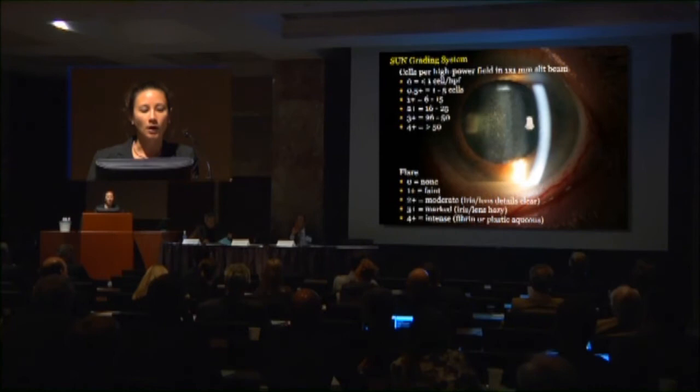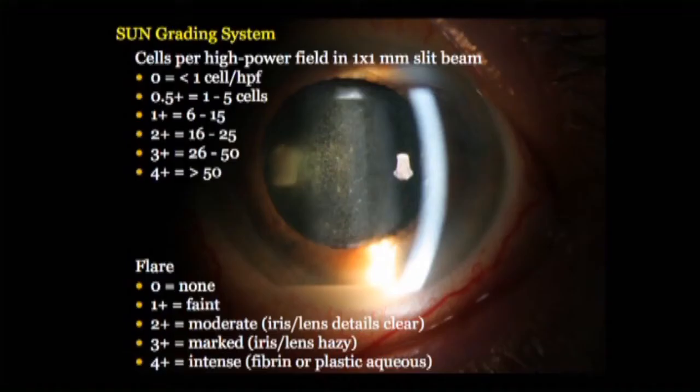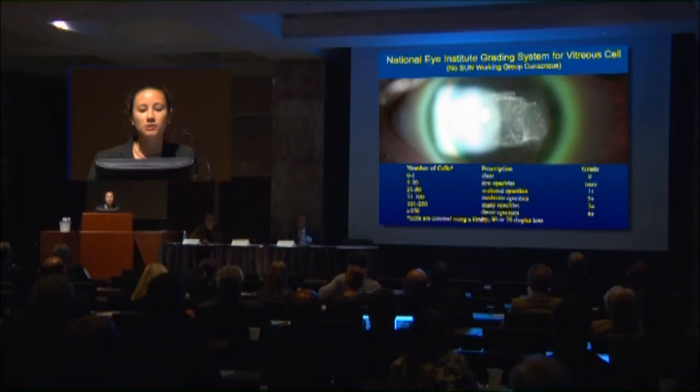The standardization of uveitis nomenclature gives us a grading system for anterior inflammation — the cells, based on the number of cells per high-powered field, and the flare, based on how well you can see the iris and whether or not there's fibrin. It's important to know that if you're going to call it trace, or 0.5 plus cells, there must be at least one cell per high-powered field, looking in four quadrants. Just seeing one cell total doesn't make it trace cell.